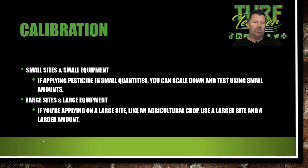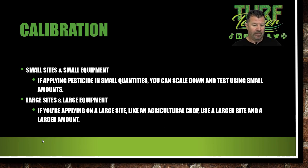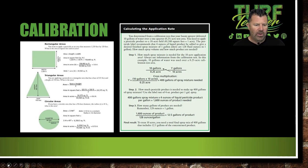Test application: do an accurate measurement of the amount in the tank, operate the equipment over the intended area at a constant speed, and then measure the amount needed to refill the tank back to the pre-application level. Figure your application rate: the amount dispersed divided by the distance covered is your application rate. With small sites and small equipment, you can scale down and test using small amounts. If you're using a larger site with larger equipment, you're going to have to use a larger site and larger amount of water to do your calibration.